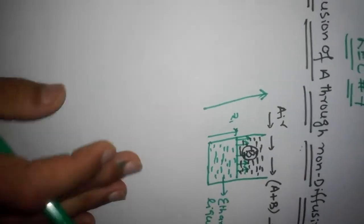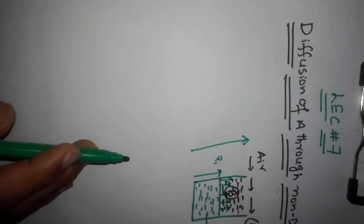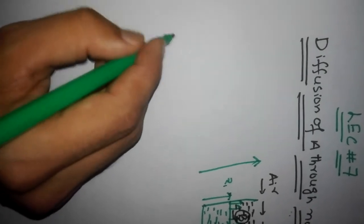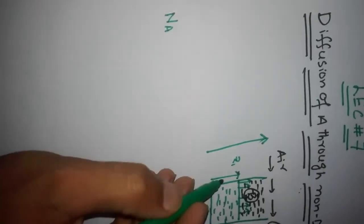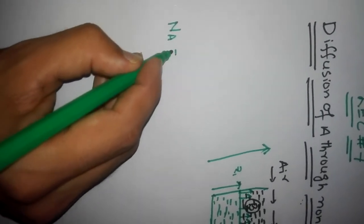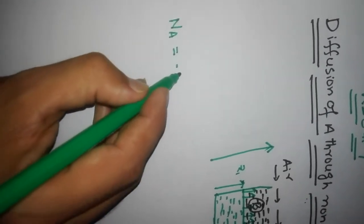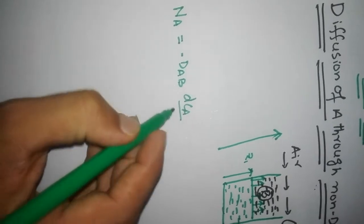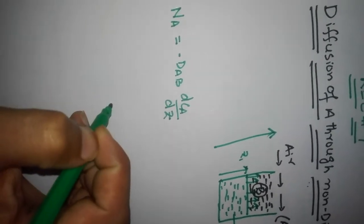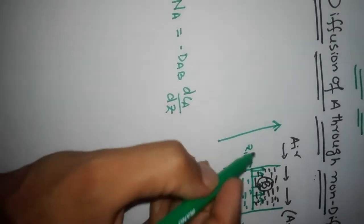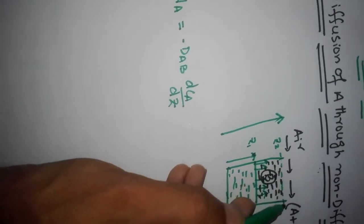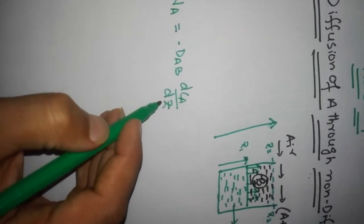Mathematically, we have already discussed a relation for this type of situation. The total molar flux of component A — where A is ethanol and B is air — is: NA = -DAB (dCA/dZ) + YA(NA + NB). Here Z1 is the lower position and Z2 is the upper position of the beaker.